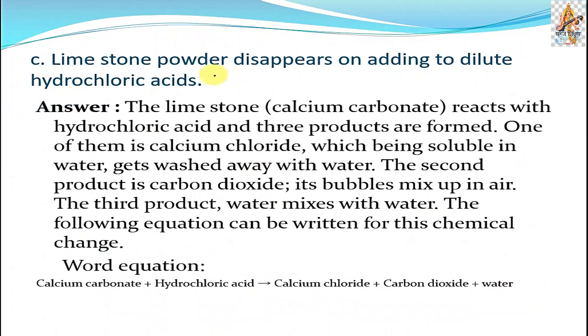Part c: Limestone powder disappears on adding to dilute hydrochloric acids. The limestone means calcium carbonate reacts with hydrochloric acid and three products are formed. One of them is calcium chloride, carbon dioxide, and water. The second product carbon dioxide, it bubbles up, mixes up in the air. The third product water mixes with water. The following is the equation. You can write all these answers in your notebook to remember it before exam. You can revise all the question answers from this section.